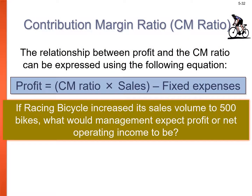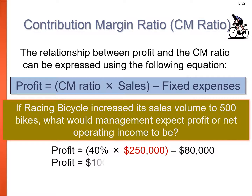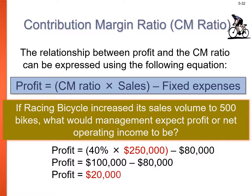The relationship between profit and CM ratio: profit equals CM ratio × sales minus fixed expenses. So if sales are $250,000 × 40% = $100,000 contribution margin, minus $80,000 fixed costs, profit is $20,000.